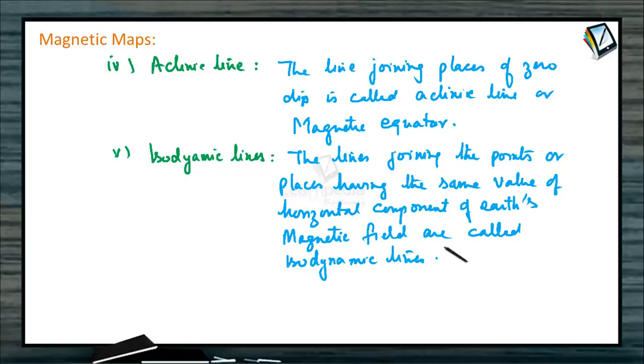So these are the lines in magnetic maps. In magnetic maps, we have isogonic, agonic, isoclinic, aclinic, and isodynamic lines.